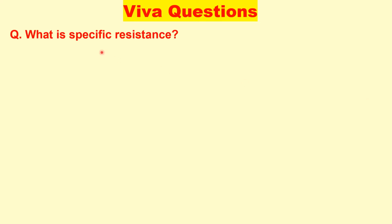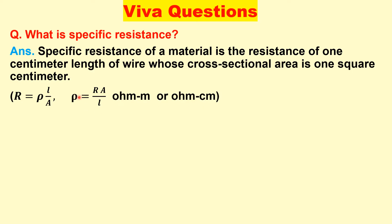Now we will discuss some important viva questions. The first question is: what is specific resistance? From the formula Rho equal to R into A by L, the specific resistance of a material is the resistance of one centimeter length of wire whose cross-sectional area is one square centimeter. The unit is ohm centimeter or ohm meter.